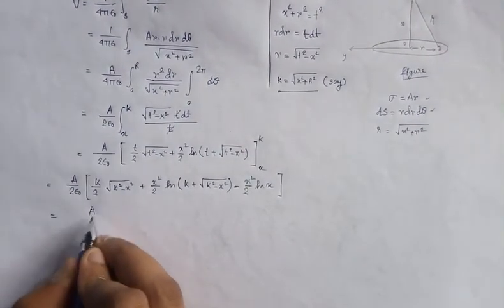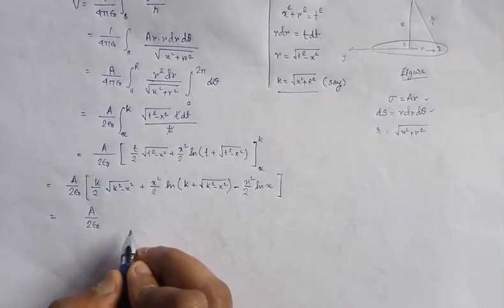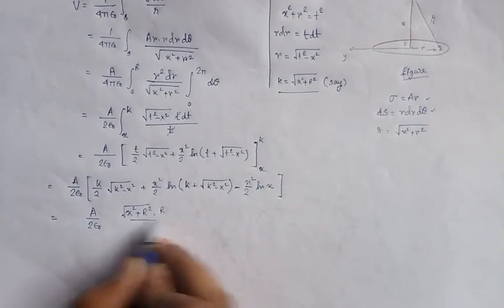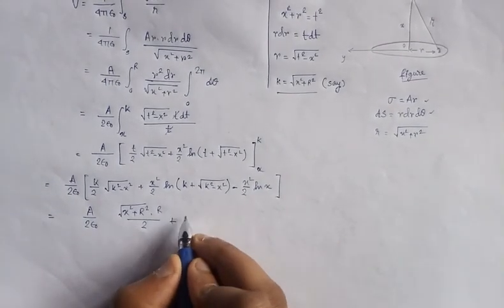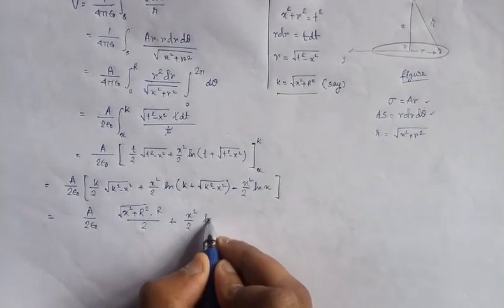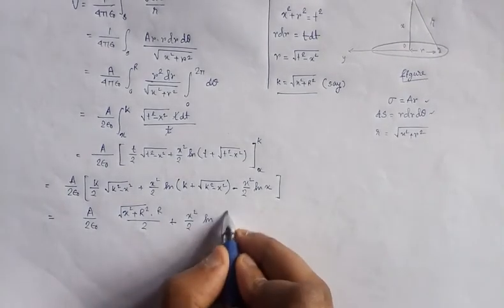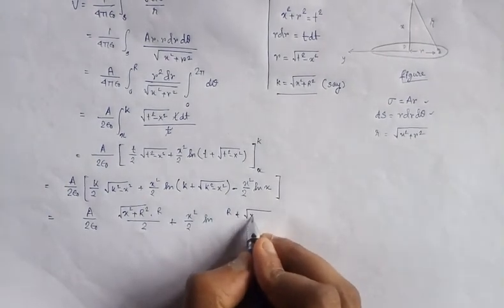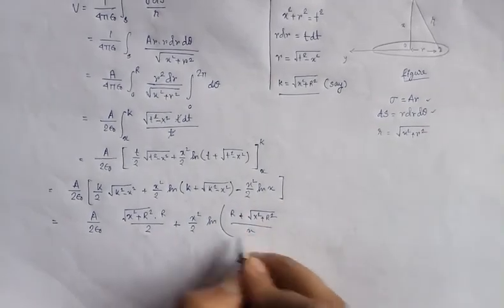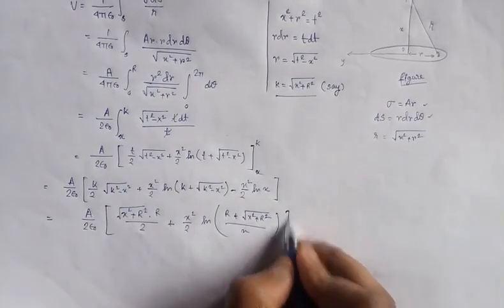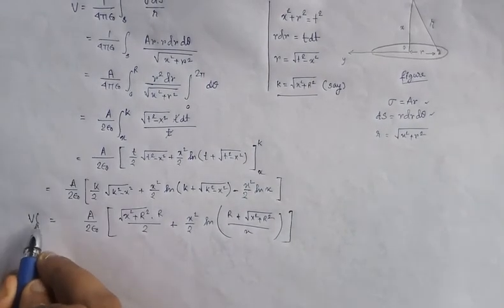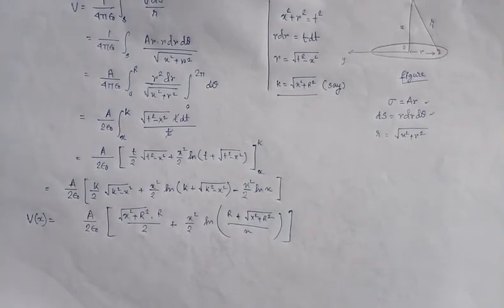Substituting back k equals root over (x-squared plus R-squared), the potential becomes V(x) equals A over 2 epsilon-naught times: root(x-squared plus R-squared) times R over 2, plus x-squared over 2 times ln of (R plus root(x-squared plus R-squared)). This is the main formula for the potential.